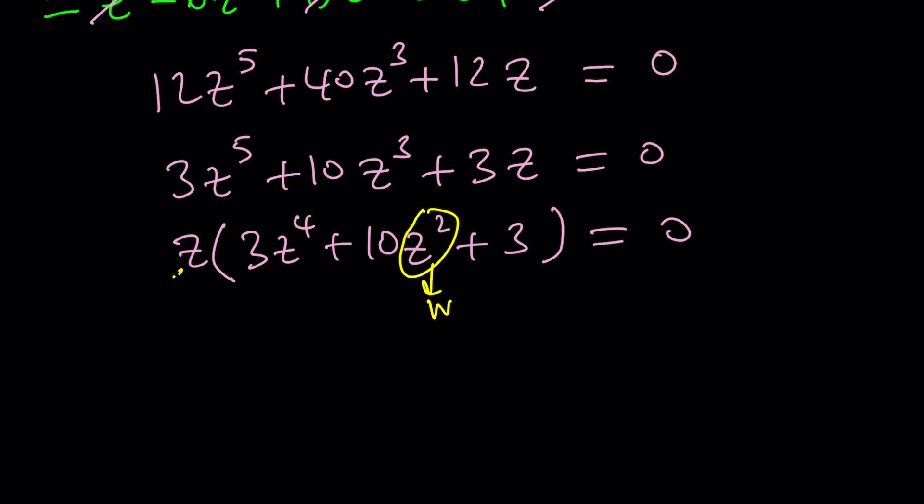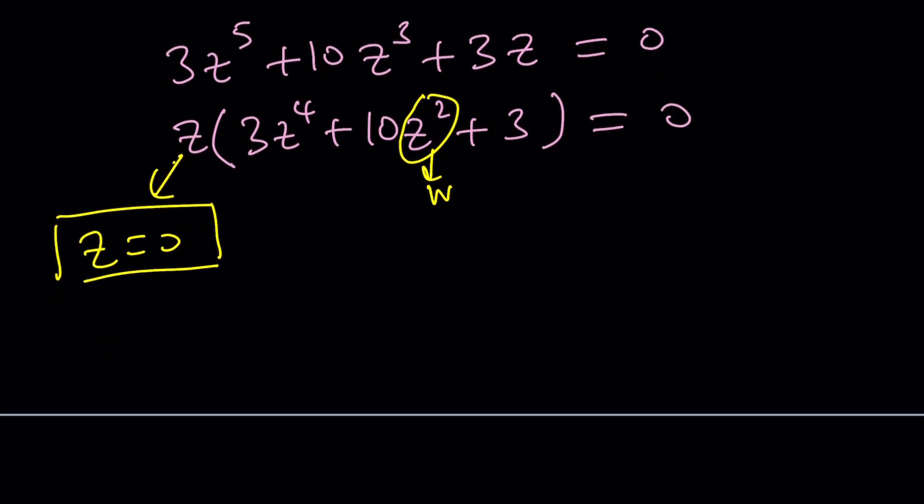We're going to get first of all Z equals zero as one of the solutions and you can actually verify that it works. Plug it into the original. You get 1 to the sixth equals negative 1 to the sixth which is true. Now the next thing you can do is write this as a quadratic.